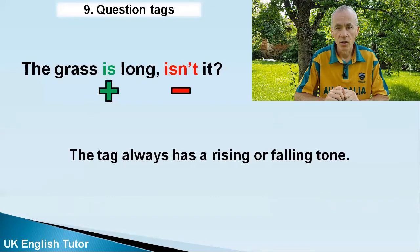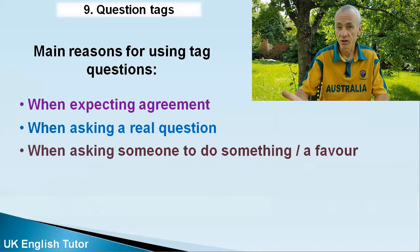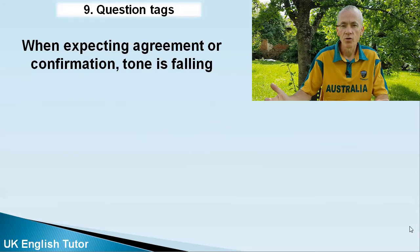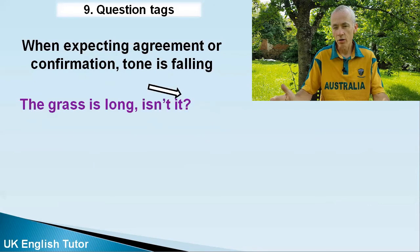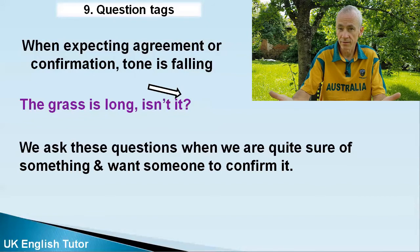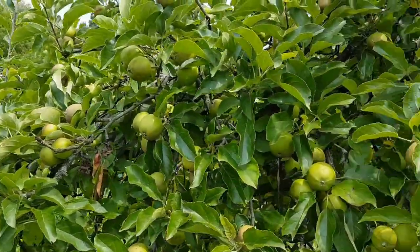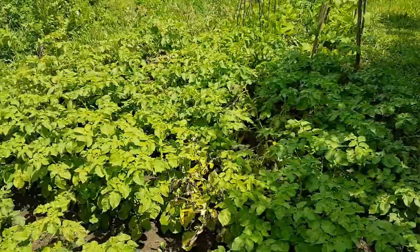There's a reason for this. Tag questions are used for three main reasons: when looking for agreement or confirmation, when asking a real question, or when asking someone to do something. When you're expecting or hoping for agreement, you use a falling tone on the tag. So: 'This grass is long, isn't it?' — it's not a really strong intonation. Here are some examples where I'm not really asking a question, just looking for agreement. The statement part can be positive or negative, but the tag will probably be the opposite: 'There are lots of apples on this tree, aren't there?' 'We didn't grow many strawberries this year, did we?' 'I have planted a lot of potatoes this year, haven't I?'